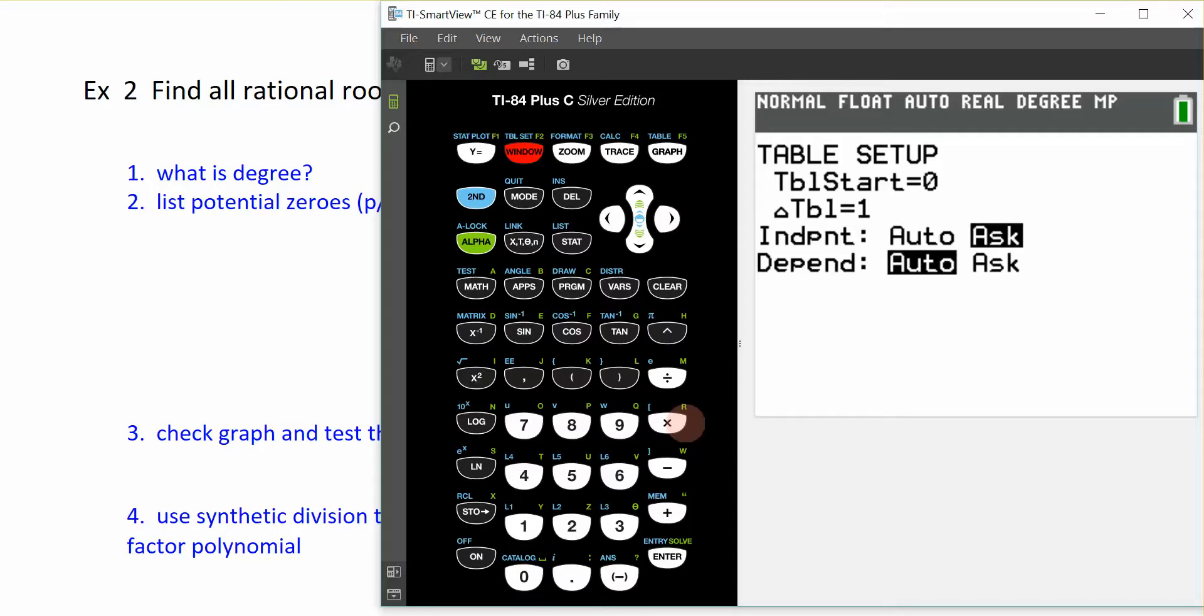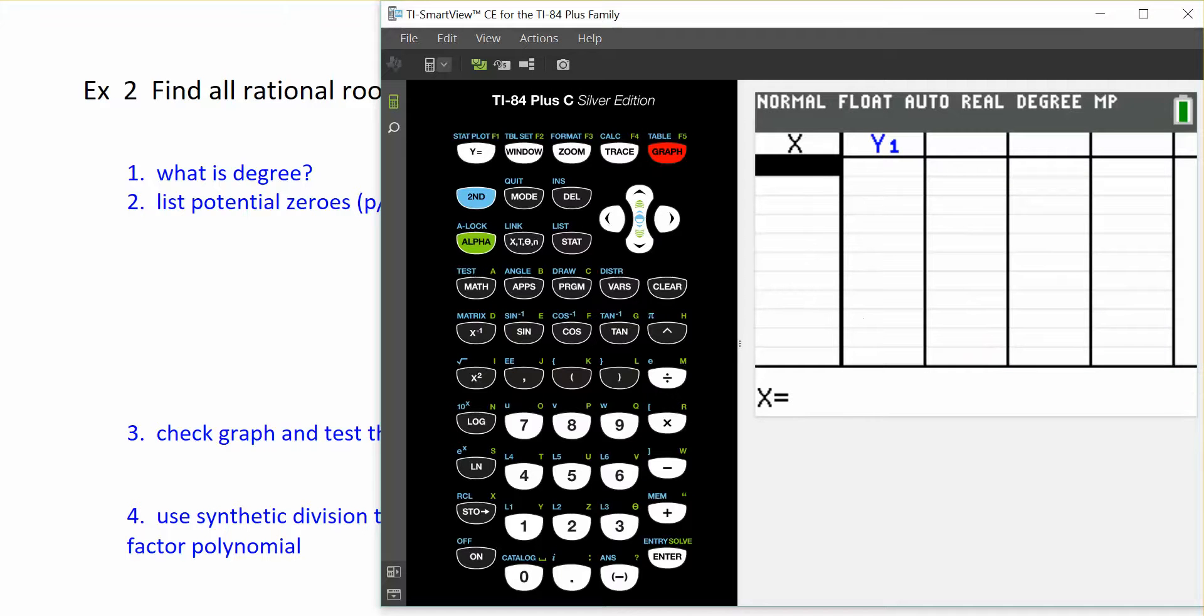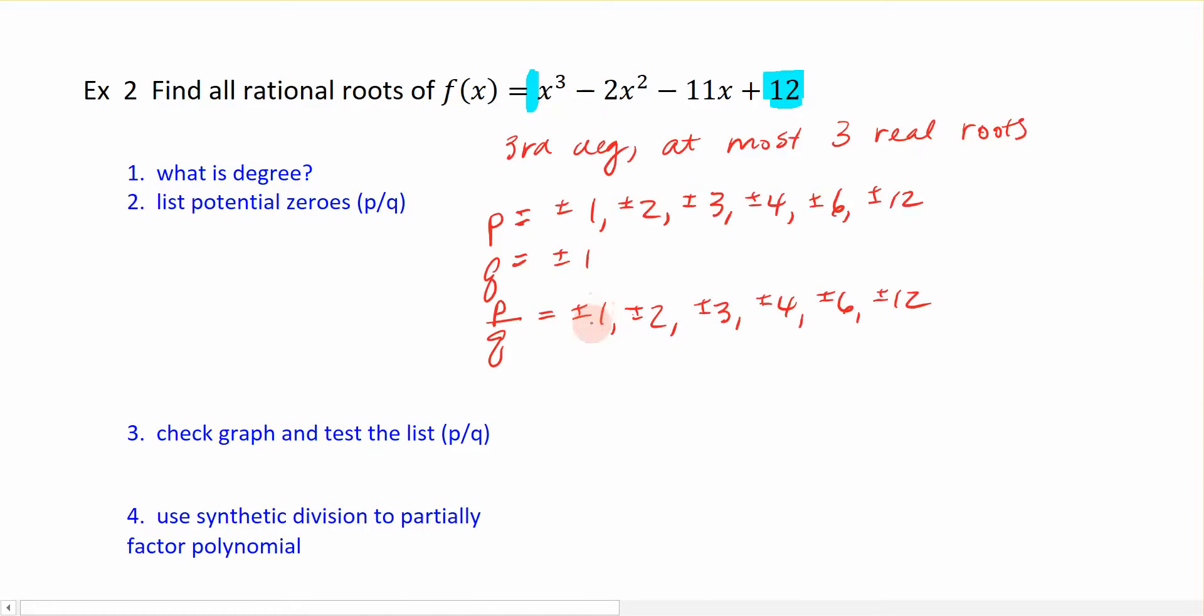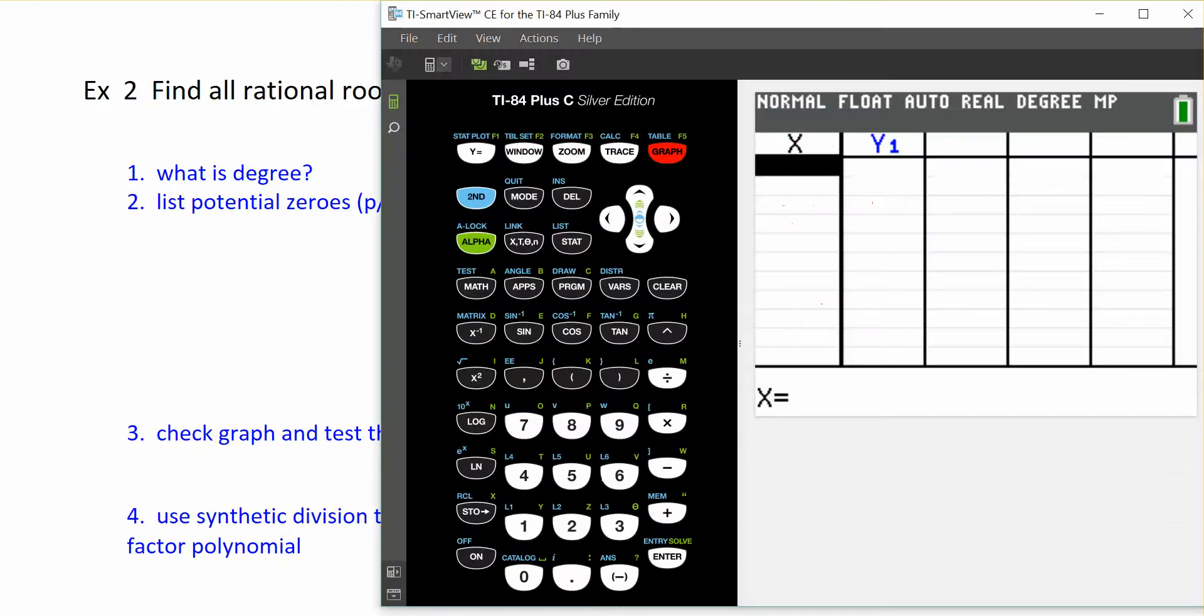So, I'm going to now go to my table. I do second graph, and you can see nothing is filled in for my x or my y's. I'm going to switch back over to my list. Remember, I have all 12 values here that I can plug into the calculator, and I'm looking for a value that's going to return a zero for me. So, let's just pick plus one. If I enter one into the calculator, I get back zero.